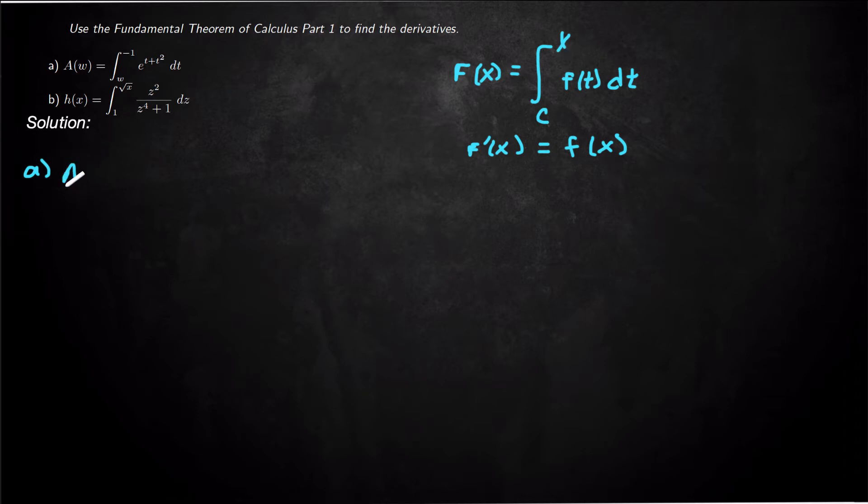A of w can be rewritten with a negative sign out front as integral from -1 to w, e to the t plus t squared dt. So they tried to trip us up but it's not going to work on us. We know how to do this.